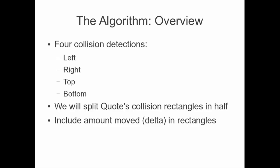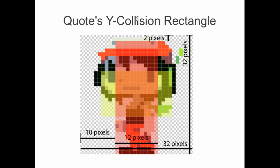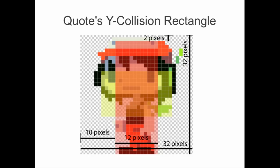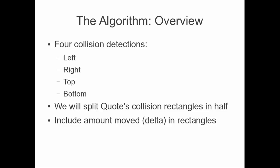To do this, we split Quote's collision rectangles in half. The top half of the Y rectangle is our top collision rectangle, and the bottom half is our bottom collision rectangle — so you can think of it as four rectangles. We also include the amount moved, the delta, in the rectangles — shown as green in pictures. If you're going right, the width extends to the right; if going left, the X moves left with the width extended.